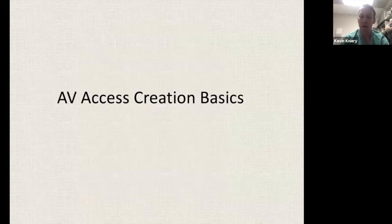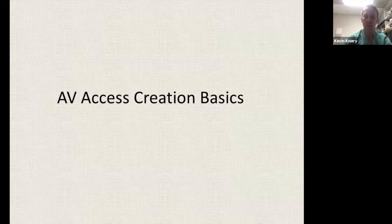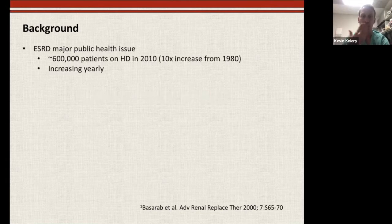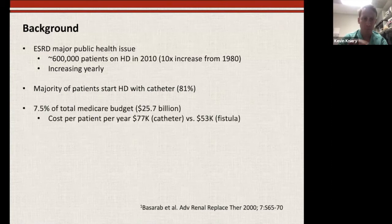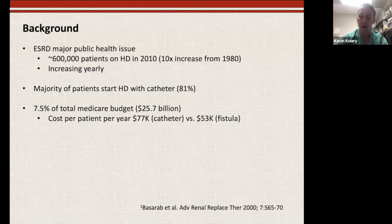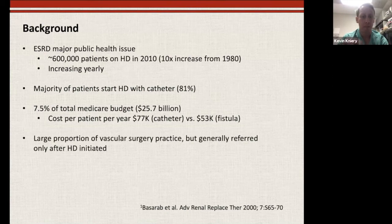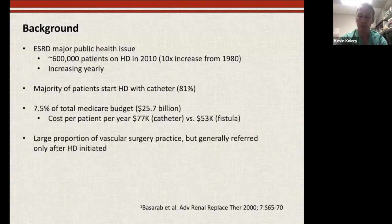We need to talk about the thinking that goes into creating access — this is board-relevant and helps you understand what we go through as vascular surgeons. Background: there are over 600,000 people on dialysis in the US and it's increasing. The majority of these patients start with a catheter, which is not ideal, and catheters are a large part of the Medicare budget. Catheters cause infections and hospitalizations. A large proportion of vascular surgery practice is referred after already on HD. If patients are preemptively referred, their chances of starting on a catheter are significantly less.